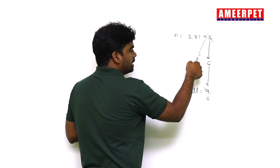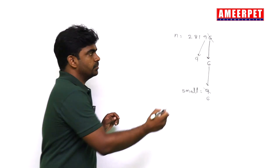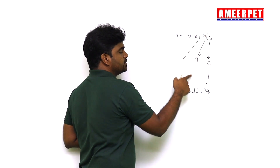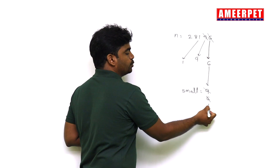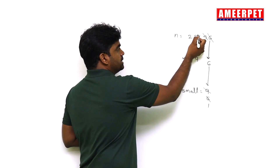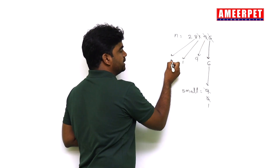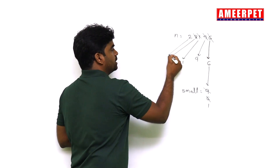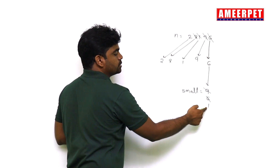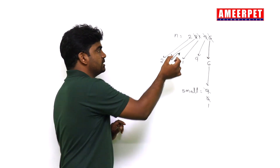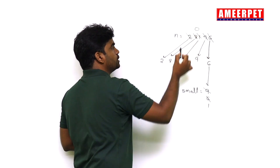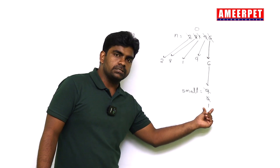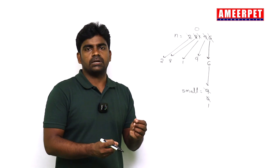The next digit is 9. Is 9 smaller than 6? No. Remove this, get the next one — 1. Yes, 1 is smaller than 6, so store it. Next, remove this and get 8. No, it is not smaller. Remove this, next is 2 — it is not smaller. Continue until the number becomes zero. Finally, small equals 1, which holds the smallest digit.